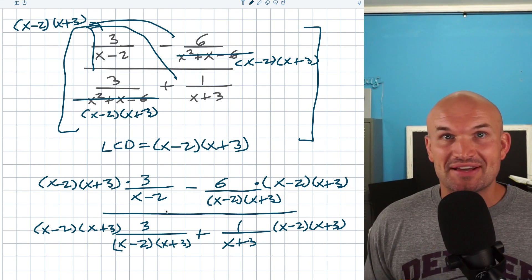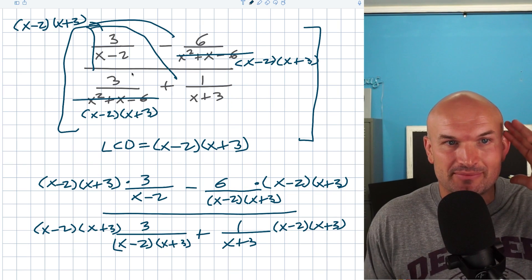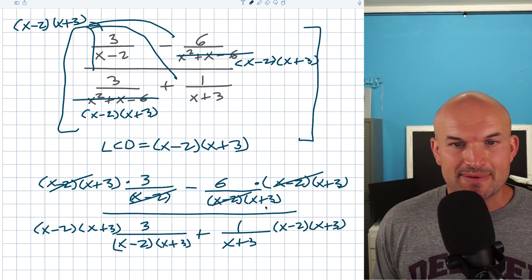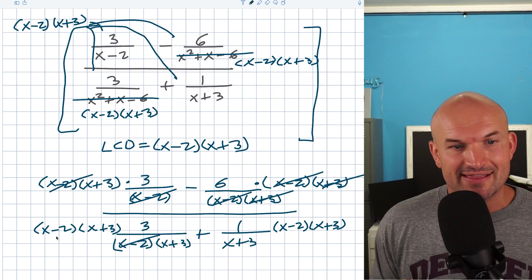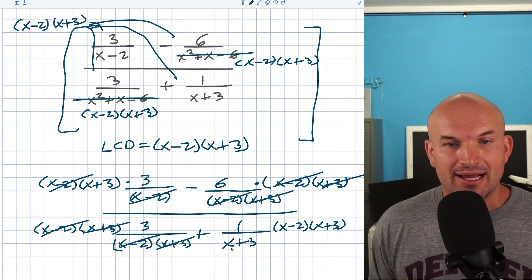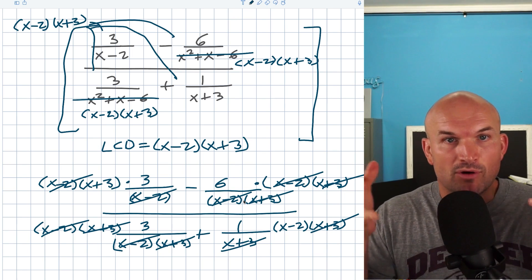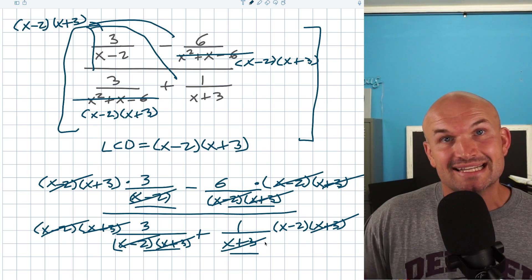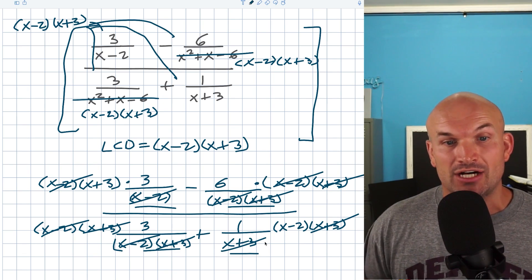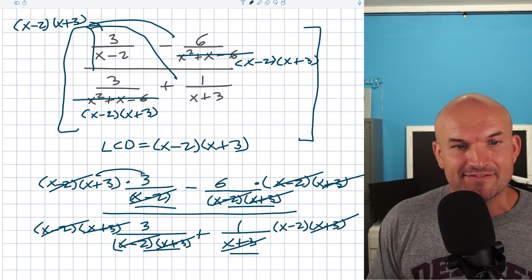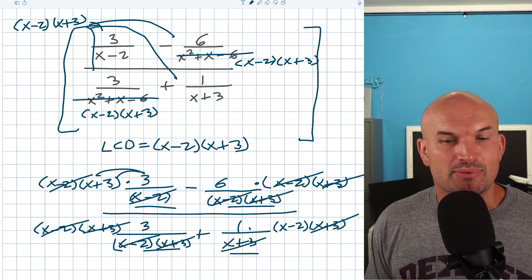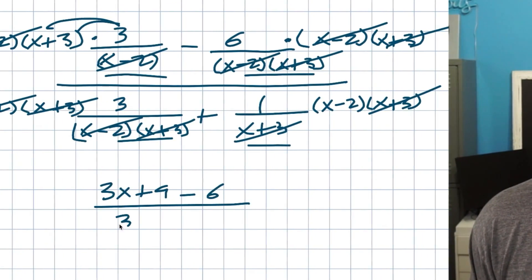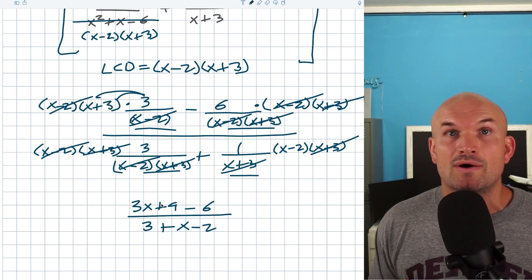That's a lot of writing, so I definitely understand if you want to do some of this in your head. But I mainly want you to see: this x minus two is going to divide out with this x minus two; here both my x minus two and x plus three denominators are going to divide out; and here just my x plus three divides out. The main idea of multiplying everything times the LCD is that all denominators evenly divide into it — if that is not the case, you either did something wrong or you found the wrong LCD. Now I'm going to apply the distributive property here, and I can rewrite this expression as x minus two. Then I can go ahead and combine like terms and simplify.